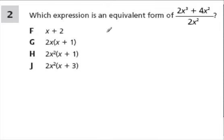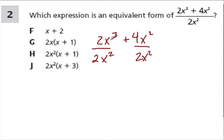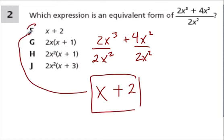Which expression is an equivalent form of this? 2x to the third plus 4x squared over 2x squared. So they want us to simplify. So each term in the numerator is over the denominator. So I get 2 divided by 2 is 1. x to the third divided by x squared is just x. Plus, well, that's just 2, because x squared divided by itself is 1. And 4 divided by 2 is 2. So I have my answer as choice F.